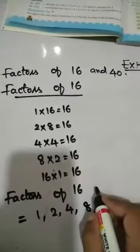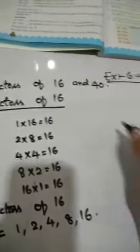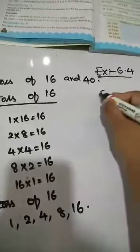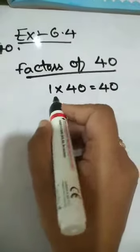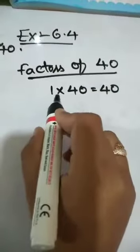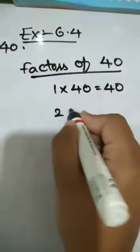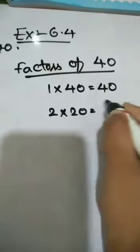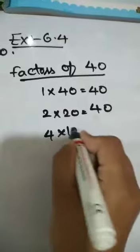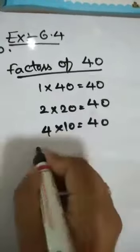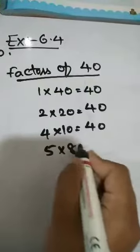So these are the factors of 16. Next, factors of 40. So we have to start with 1. Always start with 1: 1 into 40 equals to 40. Next, 2 into 20 equals to 40. 4 into 10 equals to 40. 5 into 8 equals to 40.